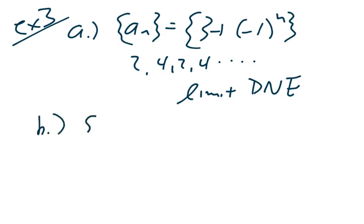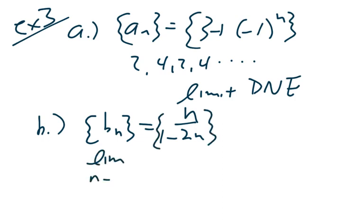Okay, another example. Example B says our terms, b sub n, again, from example 1, are n over 1 minus 2n. So, let's look at the limit as n goes to infinity of this. And so, this is pretty straightforward. This is the limit as n goes to infinity of 1 minus 2 over n. So, this is the limit of the sequence. We're going to let n go to infinity. What does that infinitieth term look like?